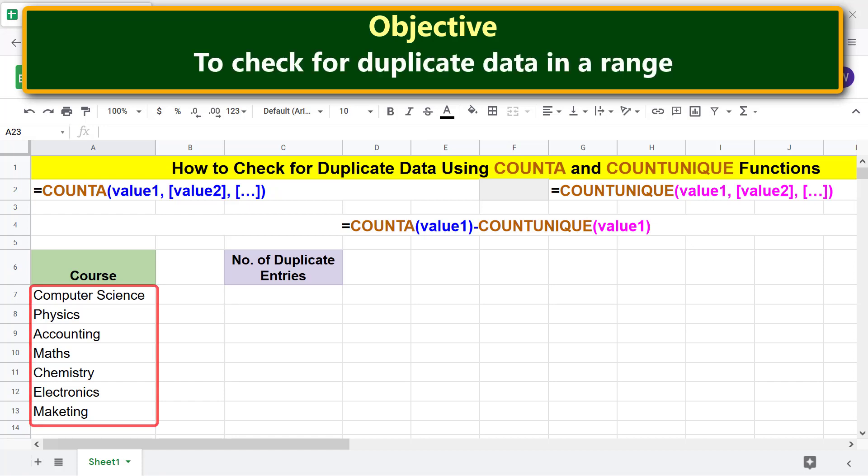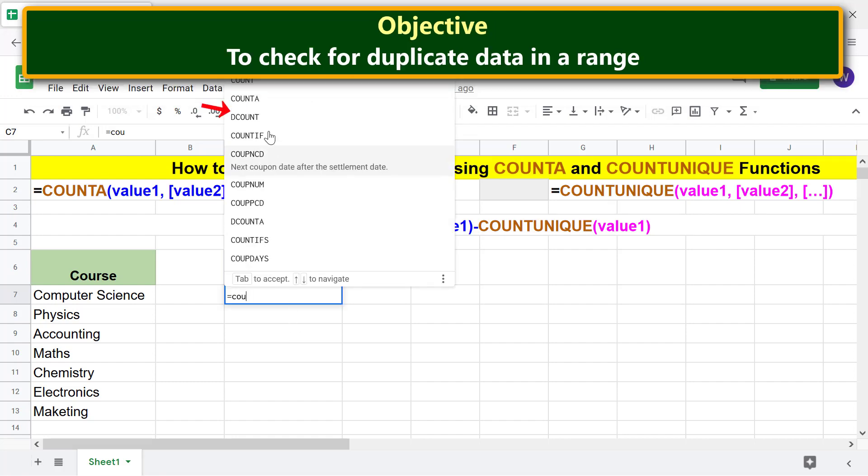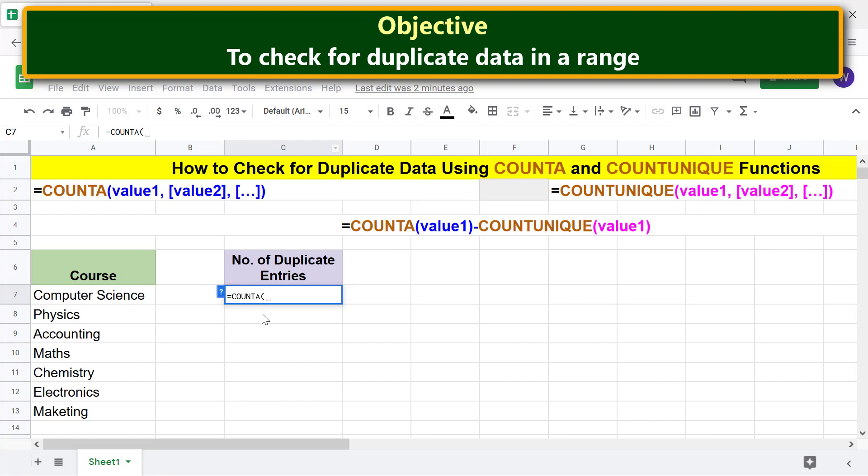Alright, we are all set to type the two function combo formula. First, type equals COUNTA and select COUNTA. For value1, select this range.